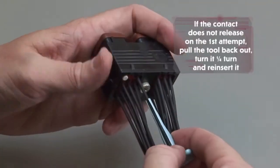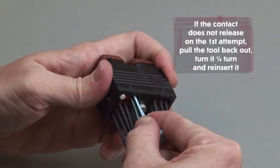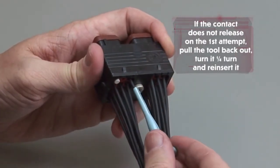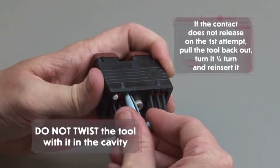If the contact does not release on the first attempt, pull the tool back out, turn it one quarter turn and reinsert it. Do not twist the tool with it in the cavity.